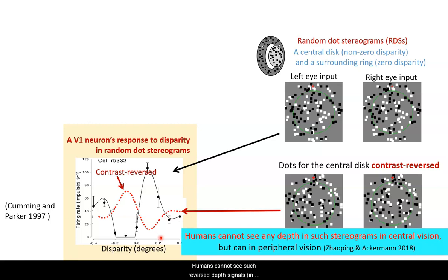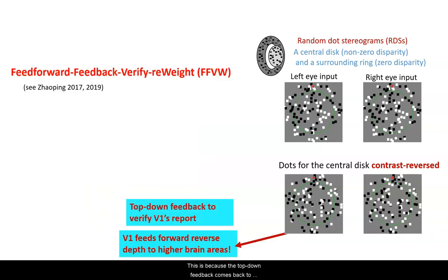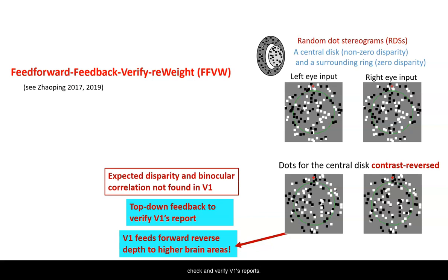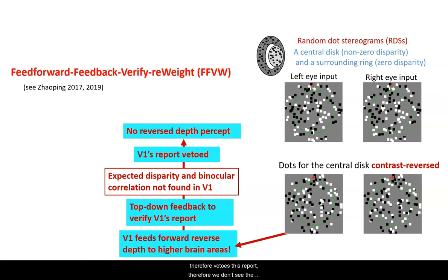Humans cannot see such reverse depth signals. They cannot tell whether the disk is in front or behind in central vision. This is because the top-down feedback comes back to check and verify V1's reports and then finds things are not quite expected. Therefore, it vetoes this report, and we don't see the reverse depths.